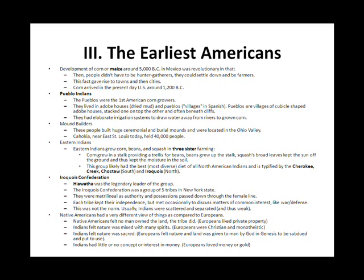Eastern Indians grew corn, beans, and squash in three-sister farming. Corn grew in a stalk, providing a trellis for beans. Beans grew up the stalk. Squash's broad leaves kept the sun off the ground and thus kept the moisture in the soil. This group likely had the best diet of all North American Indians and is typified by the Cherokee, Creek, Choctaw, and Iroquois.